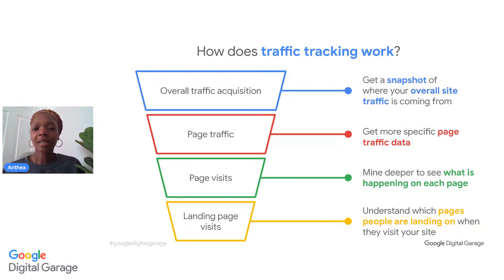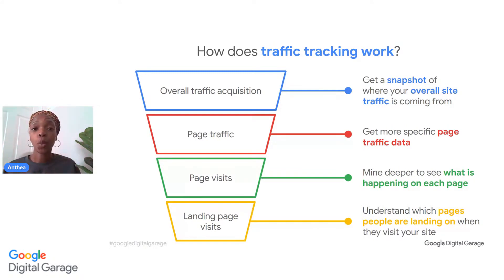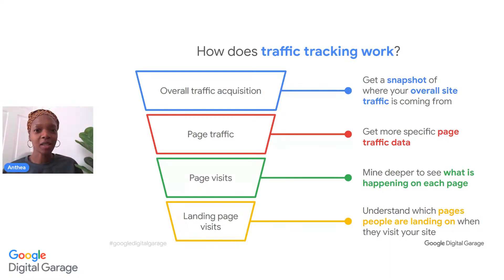This is all about trying to understand how traffic actually works. The first part of acquisition is getting a snapshot of where your overall traffic is coming from — is it social media, is it paid ads, is it organic search, is it direct (i.e., people typing the website address), or is it from your Google Business Profile? If you don't have a Google Business Profile, that is another free tool that will help you increase your reach and get more visible on Google. With page traffic, you then start diving a little bit deeper to see what's actually happening on the pages they're on.